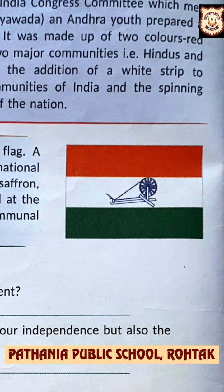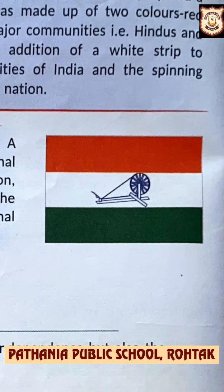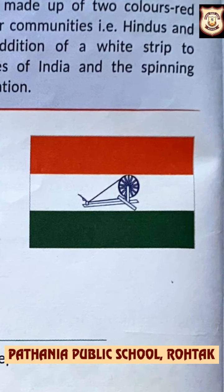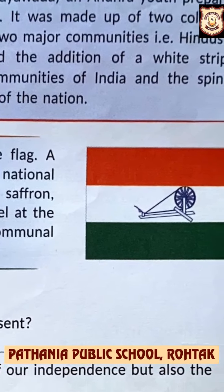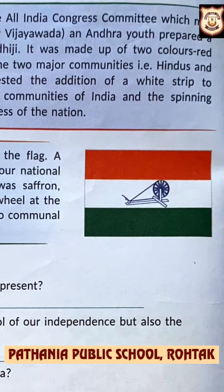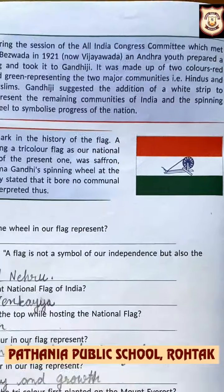The fifth national flag is a landmark in the history of the flag. We can see that it is quite similar to the present tricolor. Instead of the spinning wheel, we have the Ashok Chakra at the center of our national flag, while the colors remain the same — saffron, white, and green.